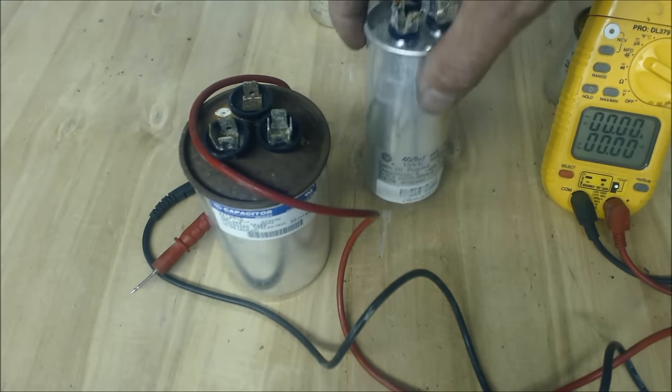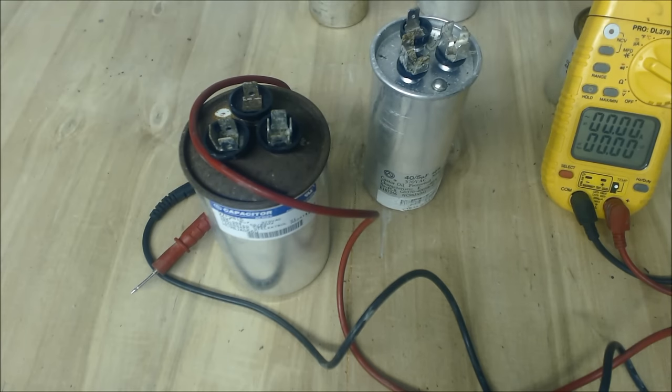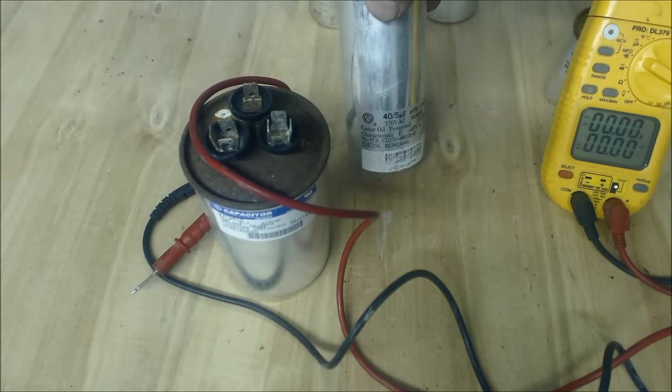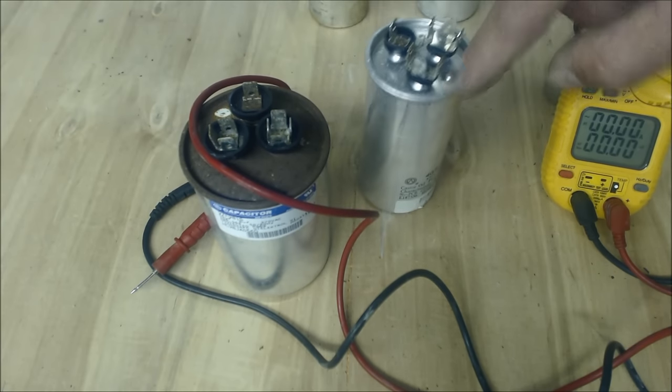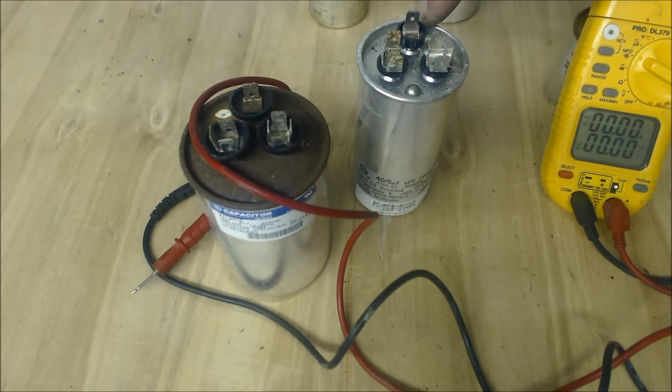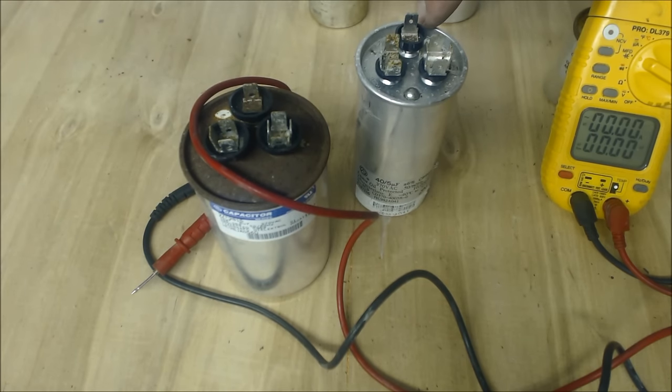Regardless of whether that's a scroll or a reciprocating, herm means compressor. Fan is talking about the condenser fan on the top of the outdoor unit.